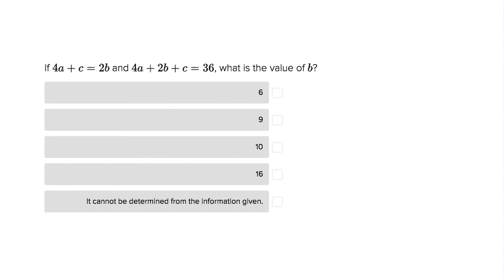This is Sophie Heller, and this is an SAT algebra question. This question looks a little bit confusing because we're dealing with three variables, but if you go simply and step by step, it's going to be pretty easy.